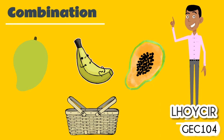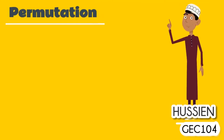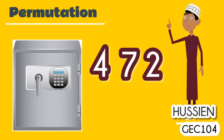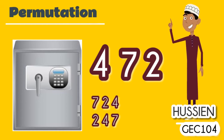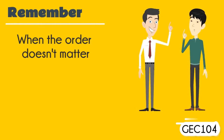Another example would be the combination to Hussein's safe, which is 4, 7, and 2. This time, we do care about the order. The number 724 or 247 won't work — it has to be exactly 4, 7, and 2. So in mathematics, we use more precise language. When the order doesn't matter, it is a combination. But when the order does matter, it is a permutation. In other words, a permutation is an ordered combination.